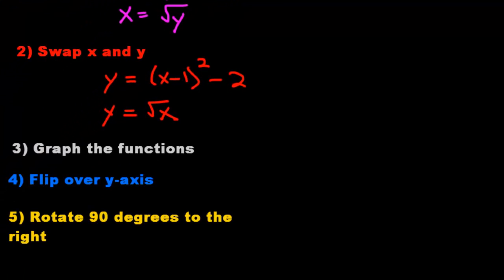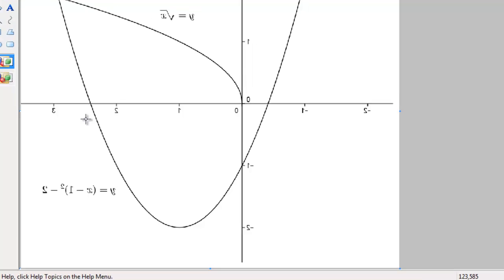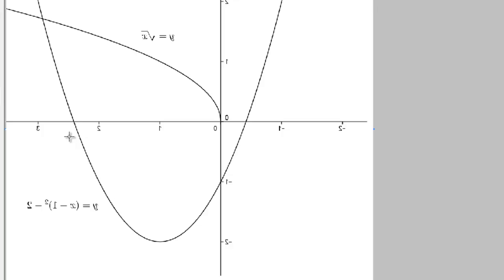And finally, step 5 is to rotate the graph 90 degrees to the right. By the way, before we rotate 90 degrees to the right, if you're graphing this on a sheet of paper, flipping over the y-axis is like flipping the sheet of paper over. And then now we're going to rotate 90 degrees to the right.